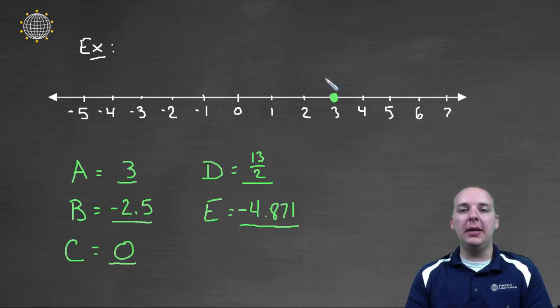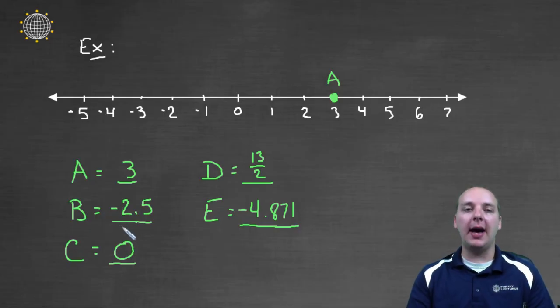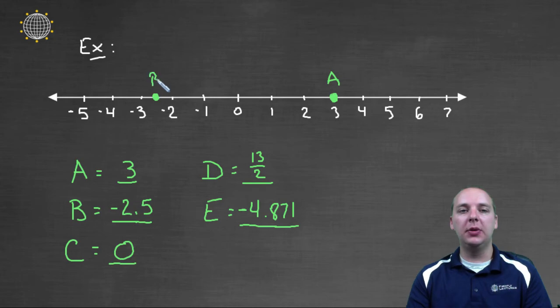If we want to plot B, so this is A right here, if we want to plot B, we'll go left, two and a half units, that's negative two point five. So we'll start at zero, and go left, one, two point five, that's half a unit. And so you can certainly plot points between tick marks, so this will be B.